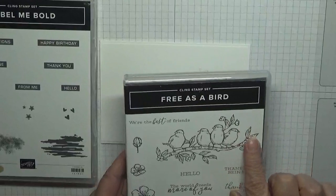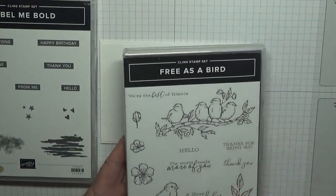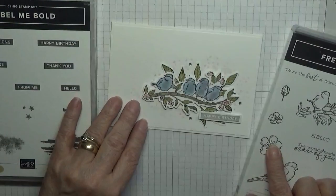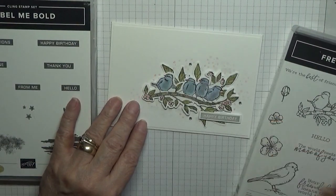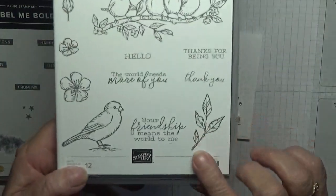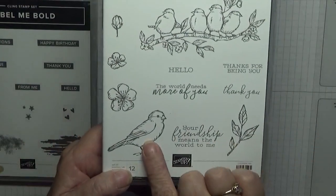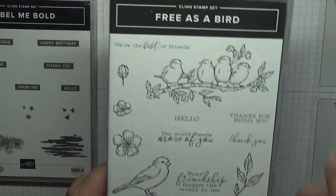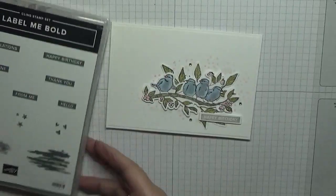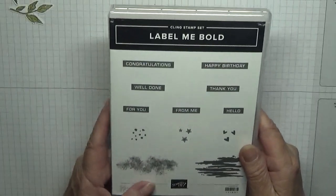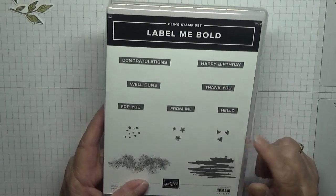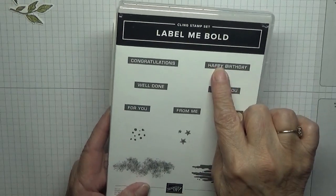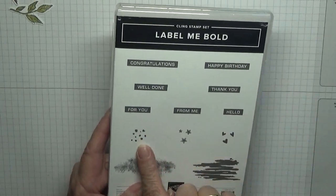To make this card I am using Free as a Bird and I'm going to be using the bird image, the flower, the leaves, and the branch with the birds on. I'm also using Label Me Bold—I don't remember seeing this in the new catalogue which is a pity because I like it—but I'm going to be using happy birthday and the dots.